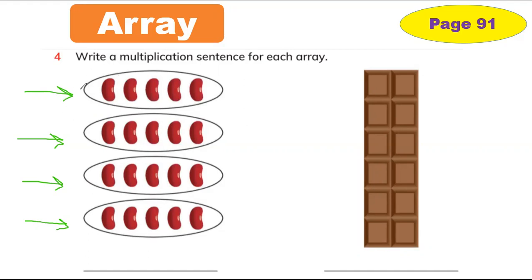In each circle we have five beans, and how many circles? Four. I'm going to write here: four. Then we are going to write the multiplication sentence. You have to know how many beans are inside one circle. In the first circle, how many beans? Let's count: one, two, three, four, and five. Same — we have five beans in the next circle, five beans in the third circle, and the fourth circle also has five beans.